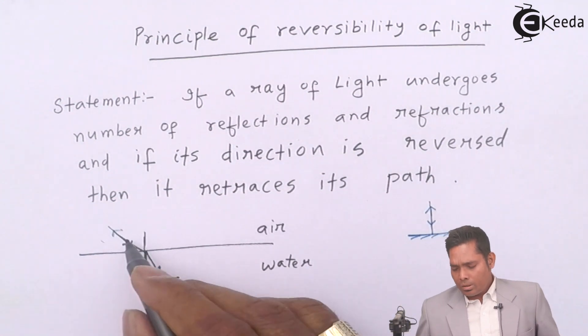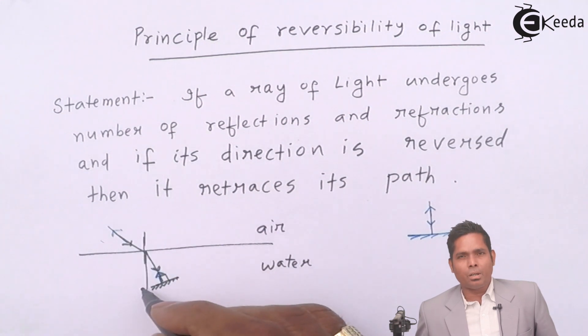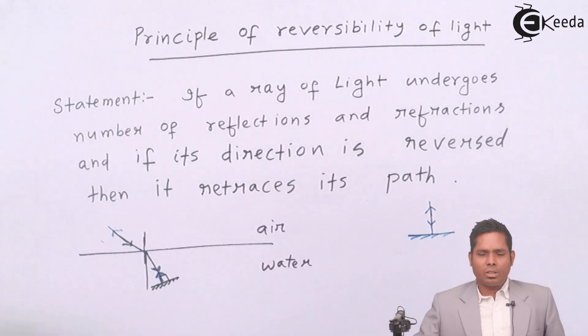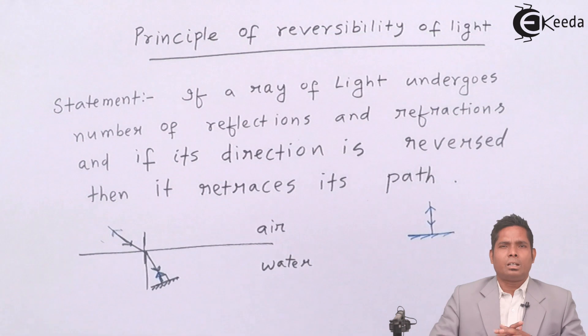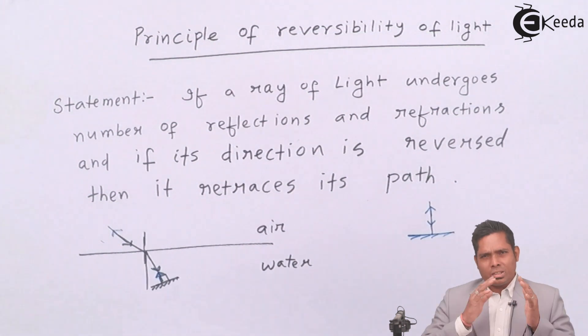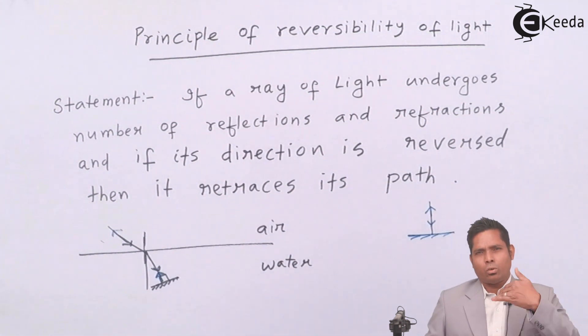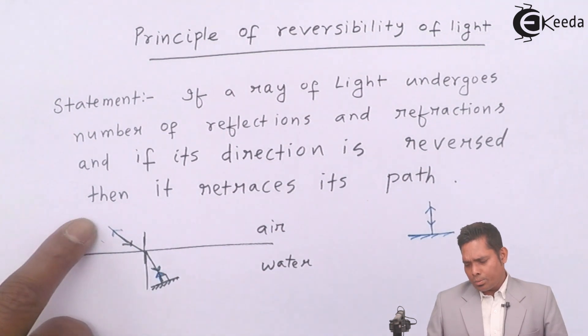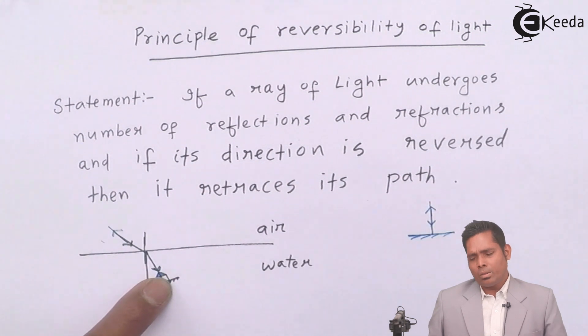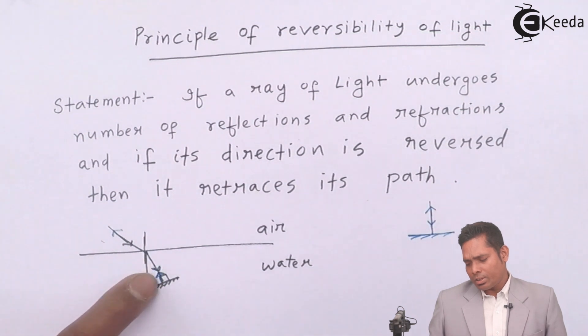So this principle is called Principle of Reversibility, or that means the ray of light reverses its direction and follows the same path that it had followed earlier. So if I say that it goes from air to water following this path, then it has to follow the same path if it is sent from this medium and from this point in this direction.